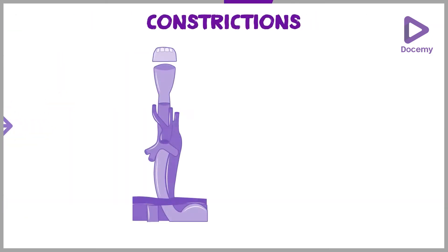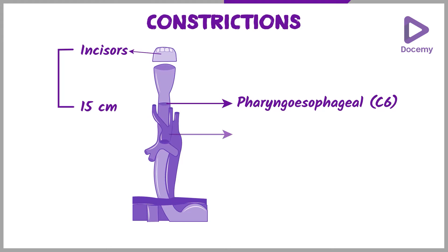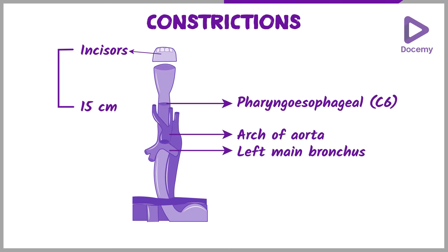The esophagus has three constrictions. The first is the pharyngeoesophageal constriction at the level of C6, or 15 cm from the incisors. The second constriction is caused by the aorta and the left main bronchus.